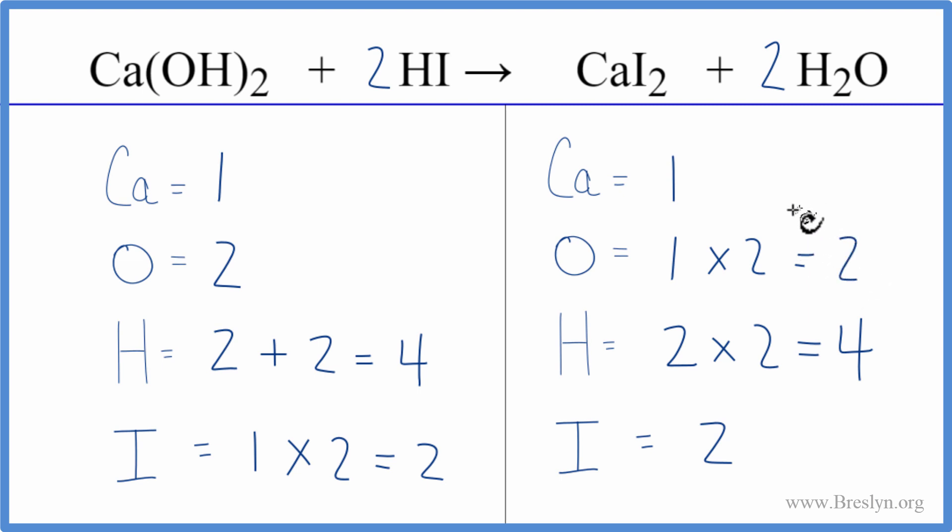The key here, know that this two applies to everything in parentheses, and be careful, make sure you count up all of the hydrogen atoms. This is Dr. B with the balanced equation for Ca(OH)₂ plus HI, calcium hydroxide plus hydroiodic acid. Thanks for watching.